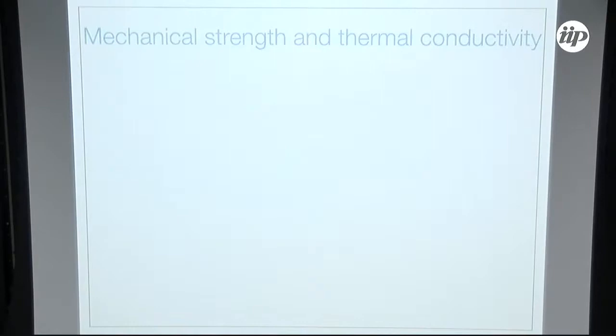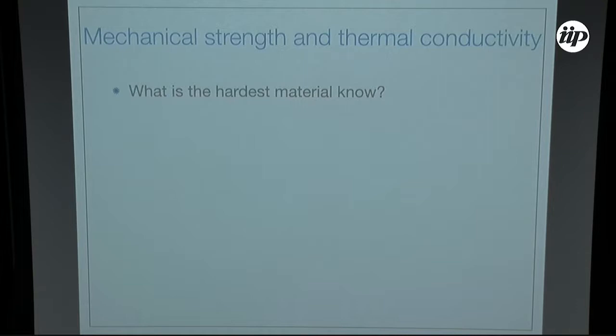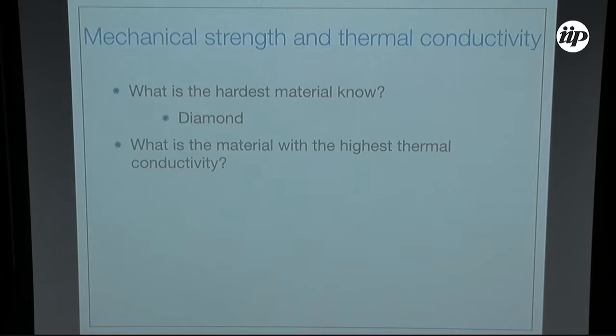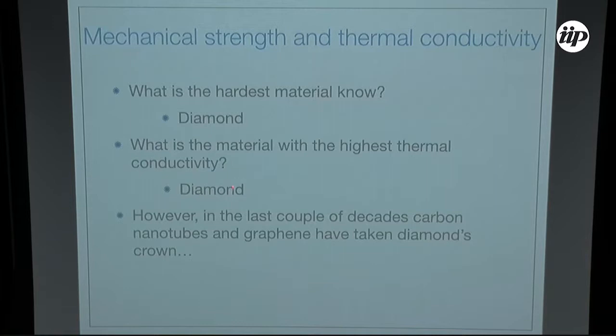Now let's go to the serious stuff. If someone asked you what's the hardest known material, what would you say? It's diamond. Now, what many people might not know is what is the material with the highest thermoconductivity? It's also diamond. But the answer to these questions is a bit outdated because in the last couple of decades — nanotubes were first observed in '91 and graphene in 2004 — they have taken diamond's crown in some sense.